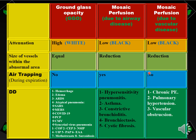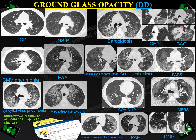However, if there is no air trapping on the expiratory film in a confirmed case of mosaic attenuation or mosaic perfusion, the differential diagnosis includes chronic pulmonary embolism, pulmonary hypertension, or vascular obstruction. If the abnormal area is instead the high attenuation area — due to equal blood vessel size between the high and low attenuation — that is diagnosed as ground glass opacity. Ground glass opacity has a broad differential: pneumocystis pneumonia, non-specific interstitial pneumonia, extrinsic allergic alveolitis, cytomegalovirus, COVID-19, MERS, SARS, bronchoalveolar cell carcinoma, pulmonary alveolar proteinosis, cryptogenic organising pneumonia, and desquamative interstitial pneumonia.